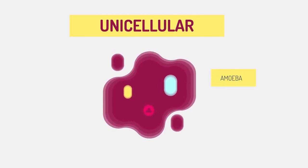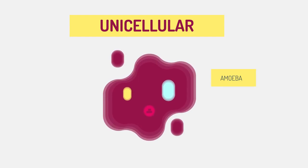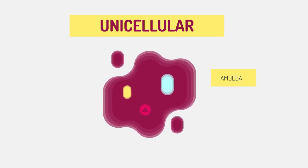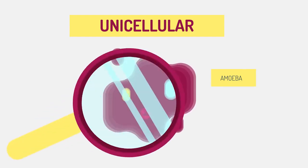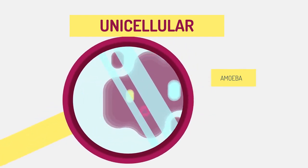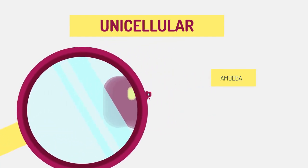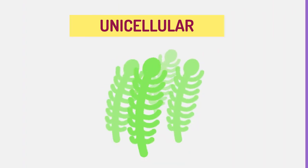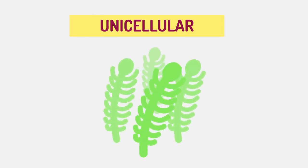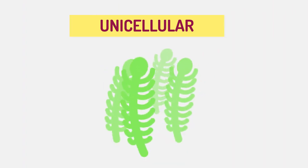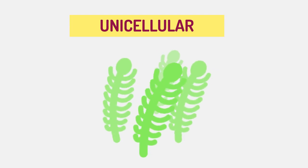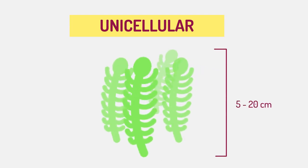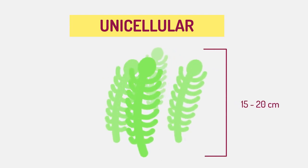They depend on simple diffusion for life. They are usually too small to be visible with the naked eye, like bacteria, and so we need a microscope to see them. But there are some unicellular algae that are about 15 to 20 cm in size.